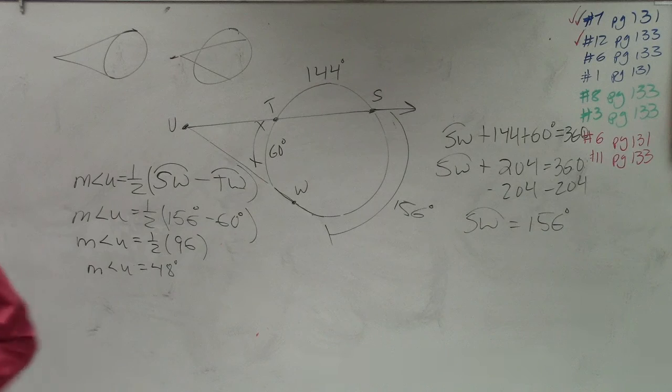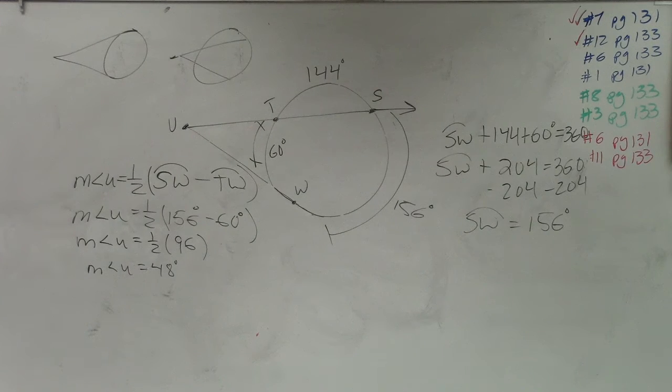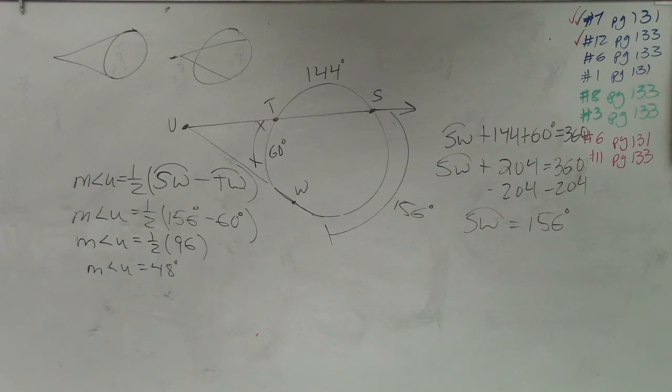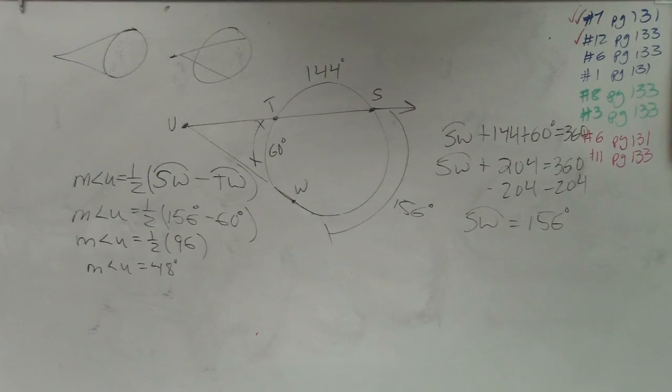And there you go — the measure of angle U is 48 degrees. Use the exact same formula and method to do question number seven.